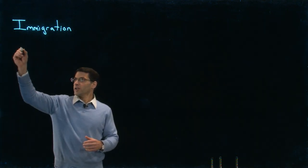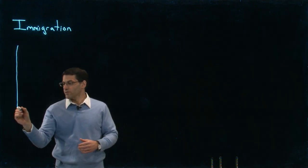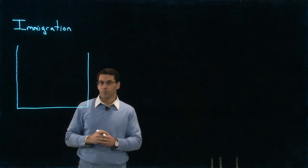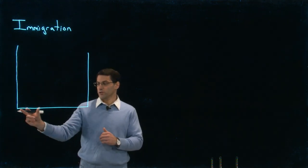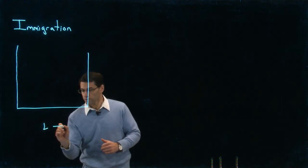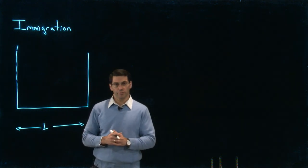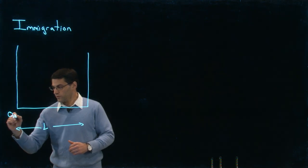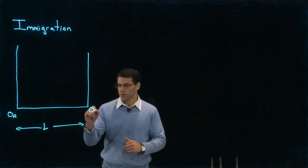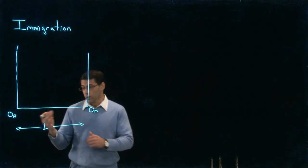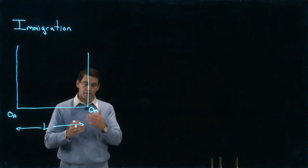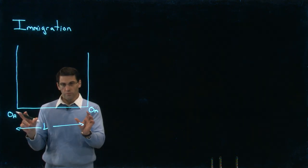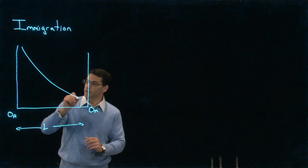Recall the graph we introduced when we started talking about the specific factors model. We had a graph showing the allocation of labor, where the x-axis shows all of the labor in the economy, with two origins — one for agriculture and one for manufacturing. We read the graph for agriculture from left to right, but the graph for manufacturing is reversed, and wherever they intersect shows the allocation of labor across the two sectors.